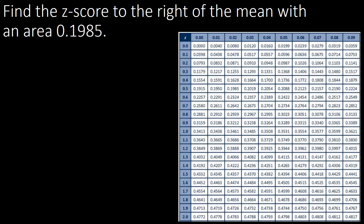Now we have a statement without an illustration, so we need to understand it carefully. Find the z-score to the right of the mean with an area of 0.1985. Since this is to the right of the mean, the area is bounded by the mean, so we locate 0.1985 directly on the z-table. Moving across and up: first column gives 0.5 and first row gives 0.02, combining to 0.52. This is positive because it says to the right of the mean.